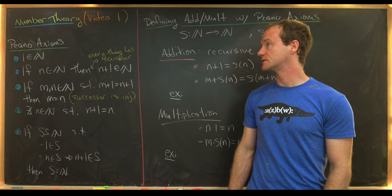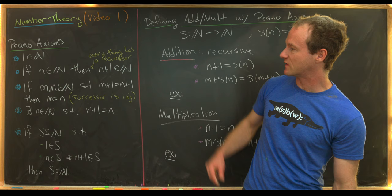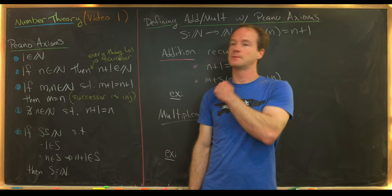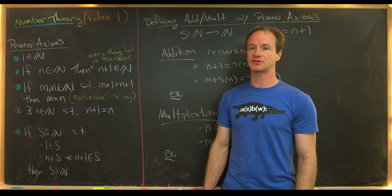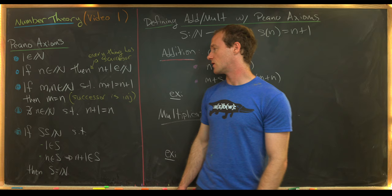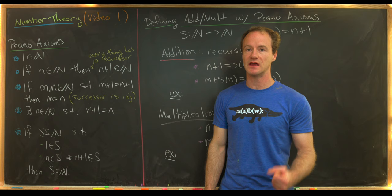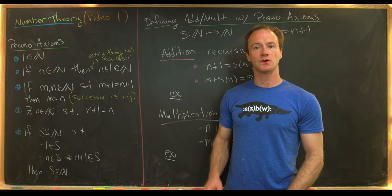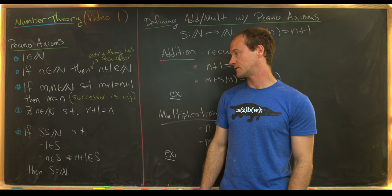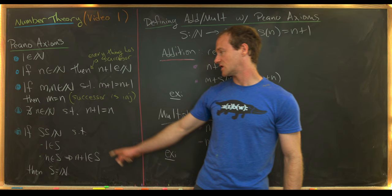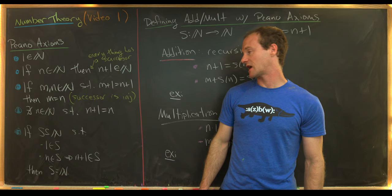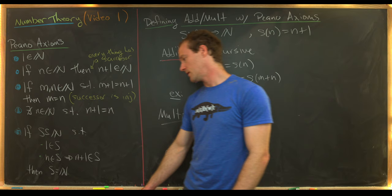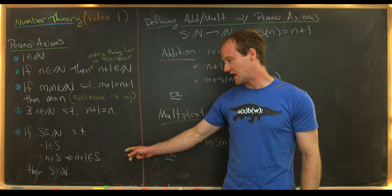The Peano axioms for the natural numbers are as follows — there are five of them. First, one is a natural number. Second, if n is a natural number, then n plus one is a natural number — everything in the natural numbers has a successor. Third, if m and n are natural numbers such that the successor of m equals the successor of n, then m equals n — the successor function is injective. Fourth, there is no natural number n such that n plus one equals n. Finally, we have the inductive axiom: if S is a subset of the natural numbers containing one, and if n in S implies n plus one is in S, then S equals the natural numbers.